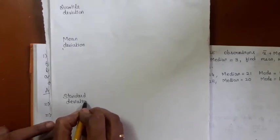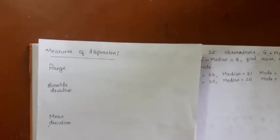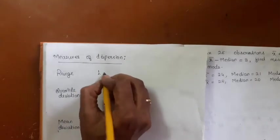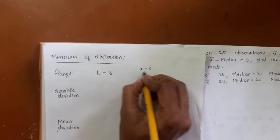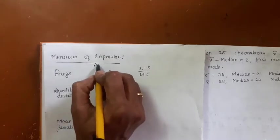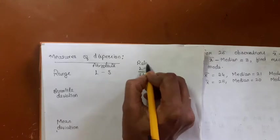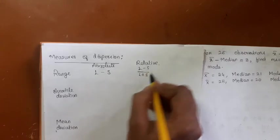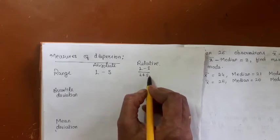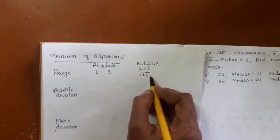It is necessary to understand the difference between absolute measures and relative measures. Absolute measures give answers in terms of the unit in which the data is expressed. The relative measure of range is also called the coefficient of range, and the answer you get will be independent of the unit in which the data is expressed.